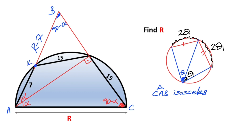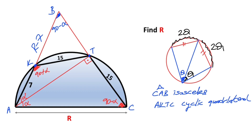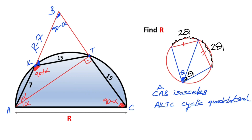Let's call these points K and T. If you notice, A, K, T, C form a cyclic quadrilateral because all vertices lie on the circle. So if one angle is 90 minus alpha, the opposite angle must equal 90 plus alpha, because in every cyclic quadrilateral the sum of opposite angles equals 180 degrees.